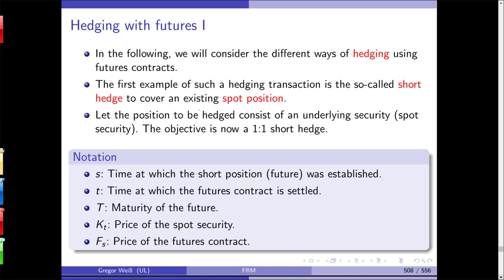You've seen futures, forwards, and options. But apart from a very distinct feeling of how to use these derivatives for hedging, you don't really know how to use them. So what we'll do is: we'll have a long position in an underlying and we want to hedge it — we want to come up with an option or derivative strategy to minimize risk, and ideally reduce risk to zero.